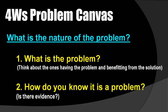Next is 'what.' Under the what block, you need to determine the nature of the problem. What is the problem, and how do you know that it is a problem? Did you read about it in a newspaper, did someone tell you, or did you observe people affected by it and feel the need to do something? So the what block covers: what is the problem, and how do you know about this problem?